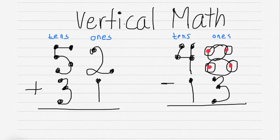Now we're going to look at the vertical math process, and basically that's putting the numbers on top of one another. In this case, we have the tens column and the ones column. And we always start with the ones column.